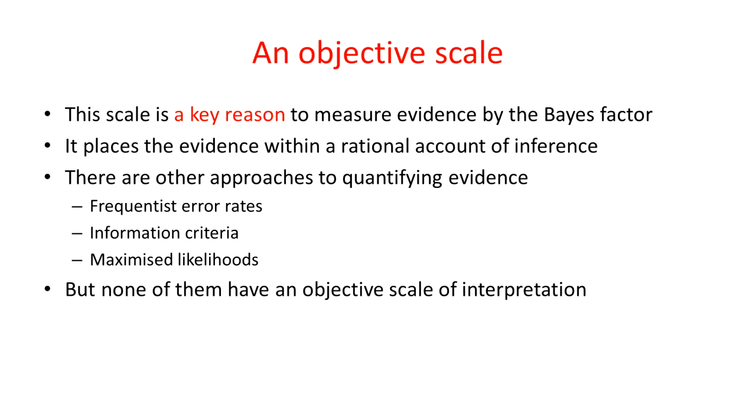There are other approaches to quantifying evidence that people have proposed, including type 1 and type 2 errors, the frequentist error rates. They can be interpreted as a measure of evidence. Information criteria. You can take maximized likelihoods as measures of evidence. And there is a lot of good work exploring those, but none of those measures as yet have an objective scale of interpretation. And this is the key distinction between the Bayes factor as a measure of evidence, and other approaches to measuring and quantifying evidence.